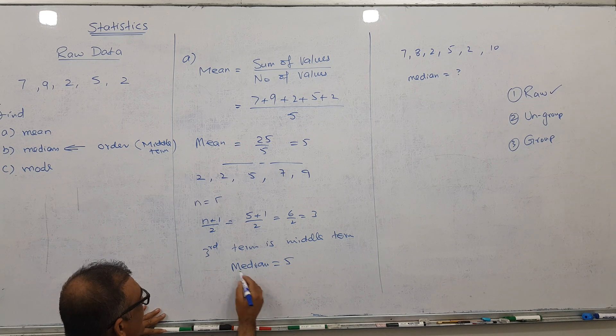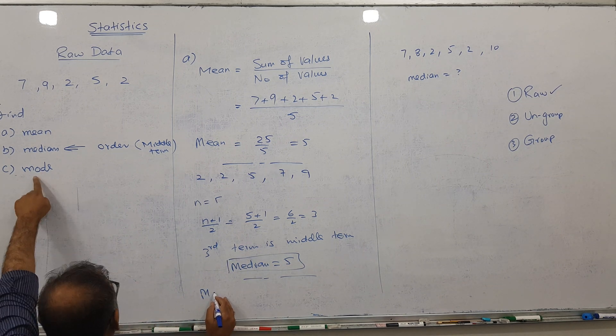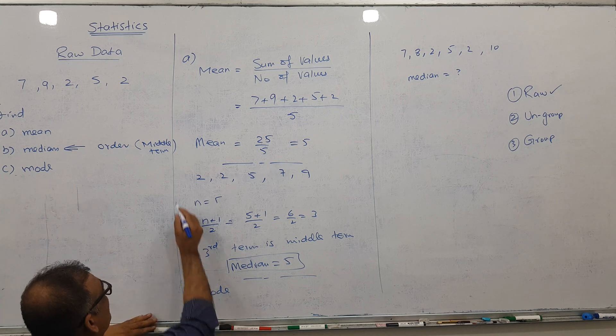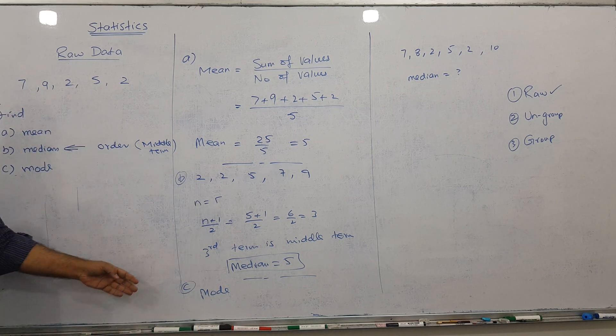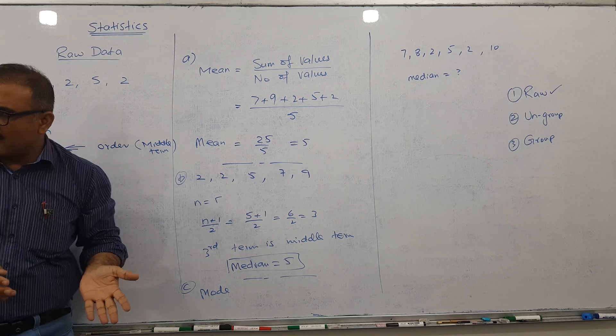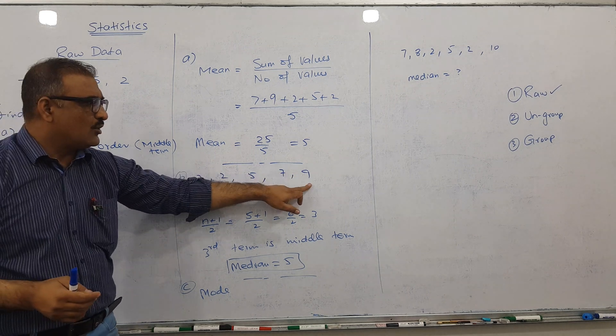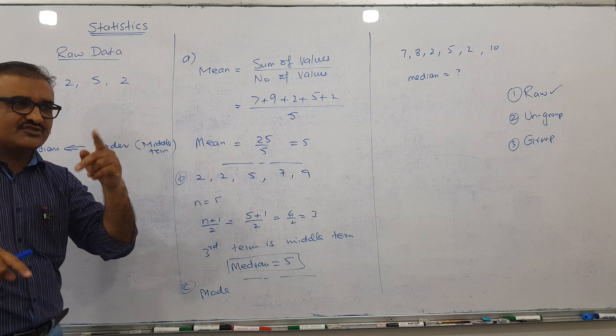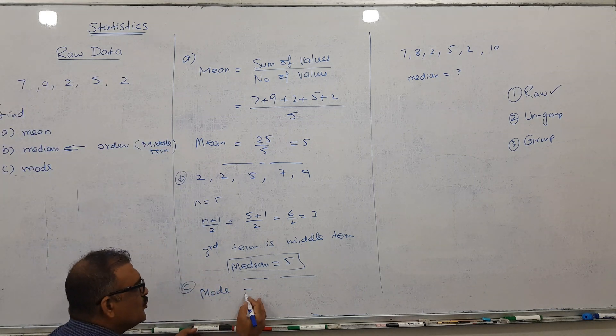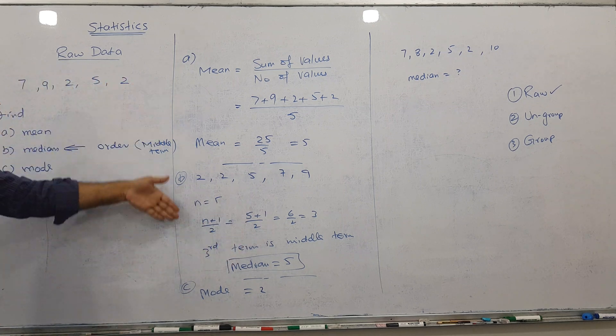Last part is mode. Mode, whenever the examiner asks us, we have a basic definition: mode is simply the most repeating number. You can see here only one number repeats. 9 comes one time, 7 comes one time, 5 comes one time, but 2 comes two times, so my answer is 2.